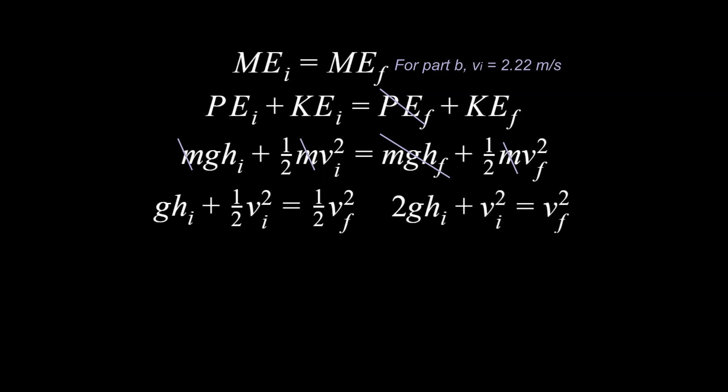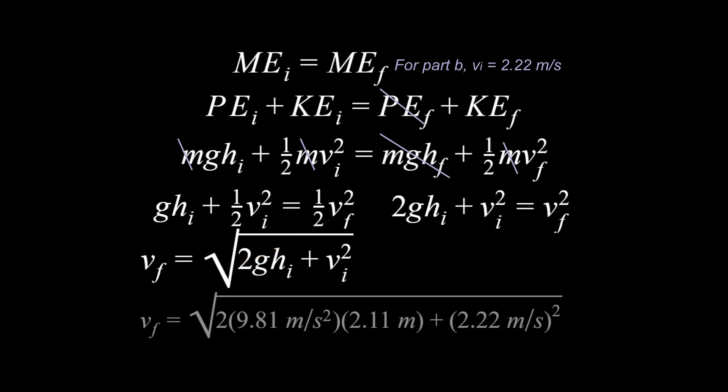We're going to do a little bit more algebra, multiply everything by two, and isolate for vf, and take the square root. Now at the very end, we're ready to plug in our values. And if we've done our math correctly, we end up with 6.81 meters per second. And that's for part b.